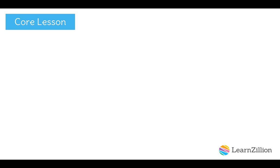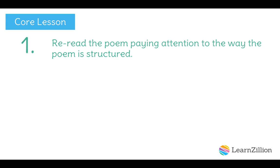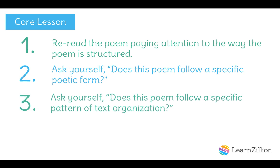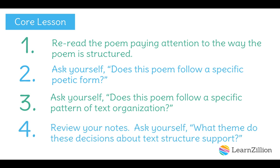Today, we're going to answer our question about how an author's text structure choices contribute to the overall meaning of a poem. We're going to use four steps to guide us. First, we will re-read the poem, paying attention to the way it is structured. Then we'll ask, does this poem follow a specific poetic form? Next, does it follow a specific pattern of text organization? And finally, we'll review our notes and ask, what theme do these decisions about text structure support?